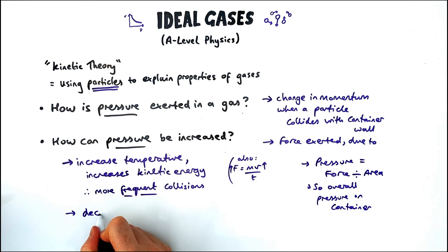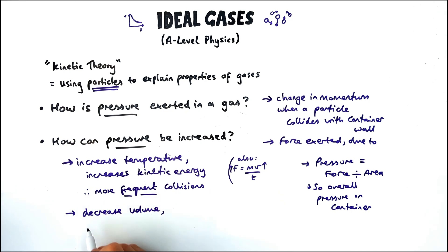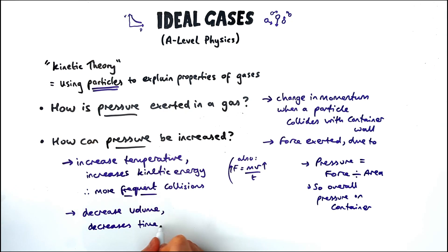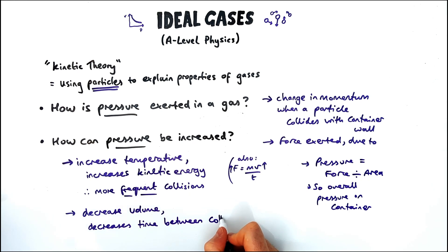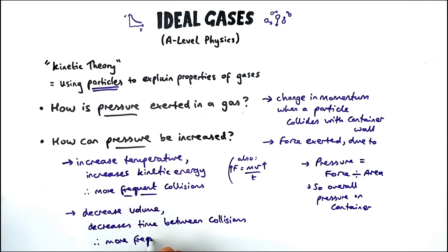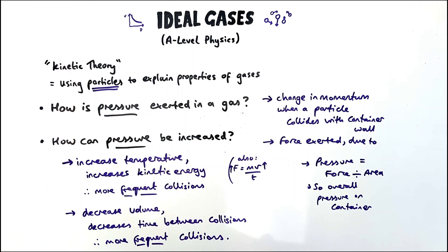As well as using temperature to change the pressure, we could decrease the volume. Decreasing the volume means there are more frequent collisions because there's a decreased time between collisions — more collisions per second, meaning a greater overall force, meaning a greater pressure because pressure equals force divided by area.